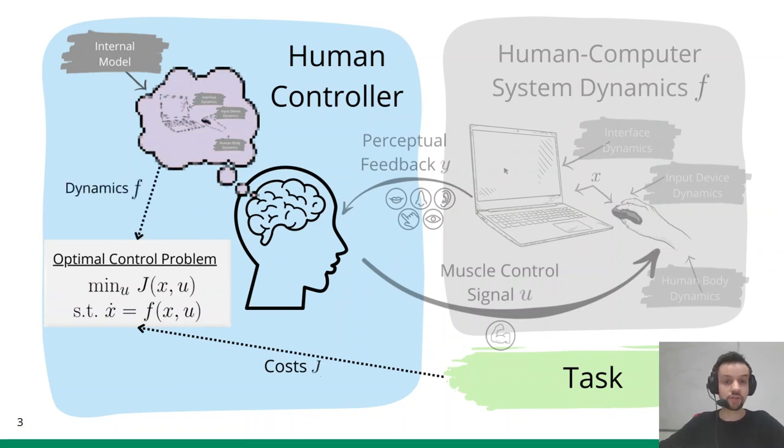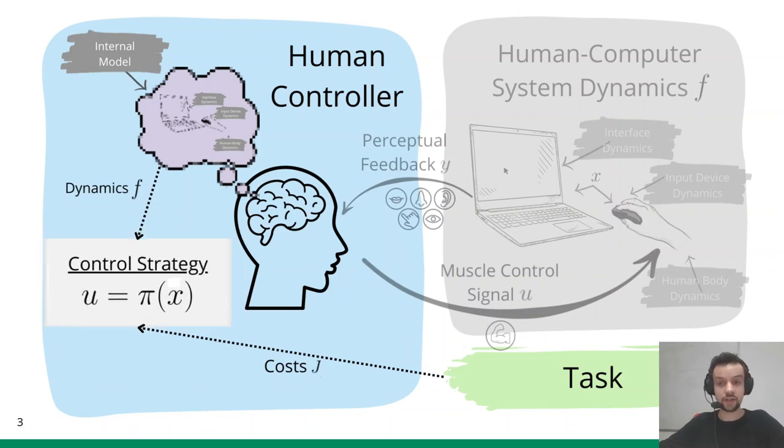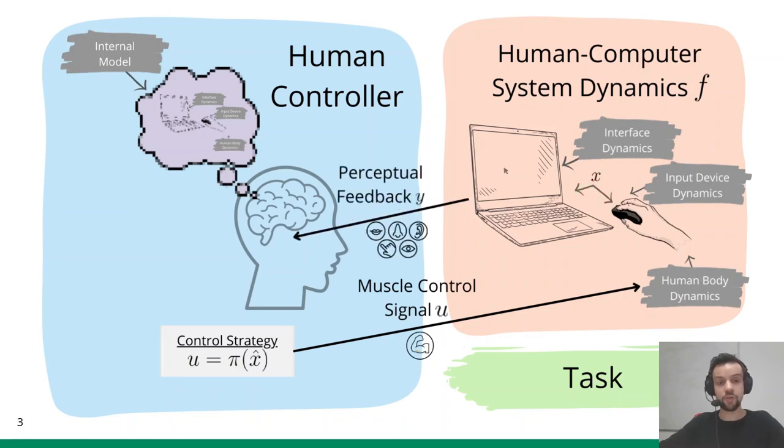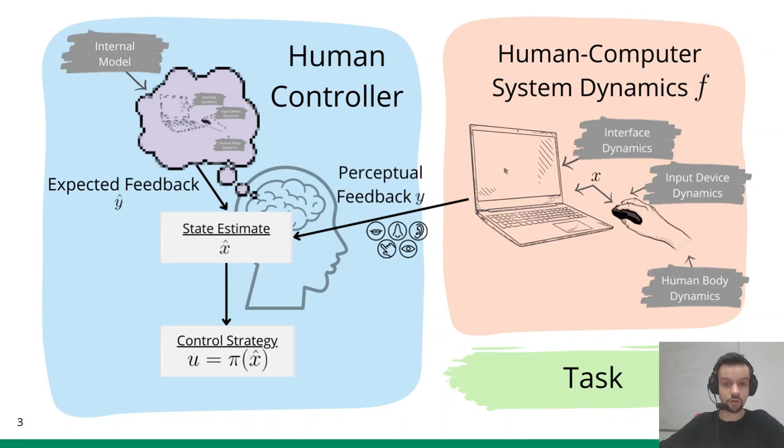The optimal control problem can be solved once in advance, resulting in a control strategy pi that maps an arbitrary state X to the corresponding optimal control U. And this strategy can be used for forward simulations as follows. Given a muscle control U, the state of the body, the input device, and the interface is updated. Partial information on these states is obtained as feedback. This perceptual feedback is compared to the feedback expected from the internal model, which allows to form an own estimate X-hat of the true but unknown state X. The control strategy then provides the next optimal muscle control U, which again affects the system state and so on.